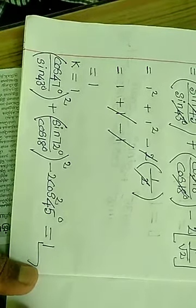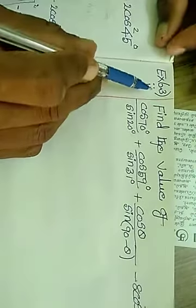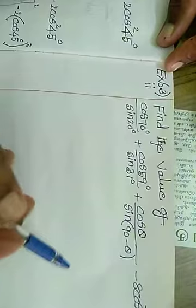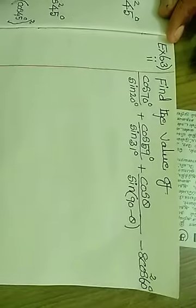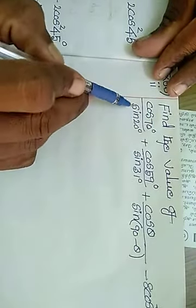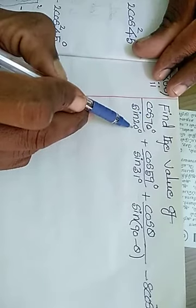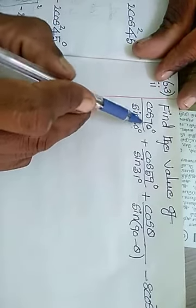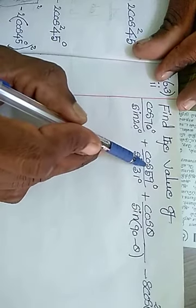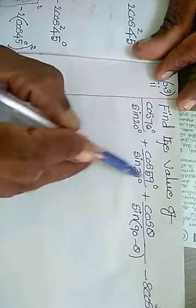Now we are going to see the second subdivision, Exercise 6.3 second subdivision. The question is: cos 70 degree divided by sin 20 degree — numerator cos, denominator sin — plus cos 59 degree divided by sin 31 degree, using complementary angle form, since 70+20=90 and 59+31=90.